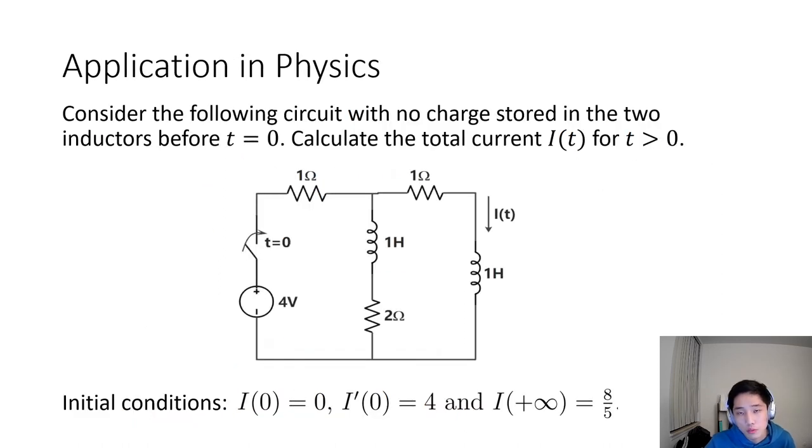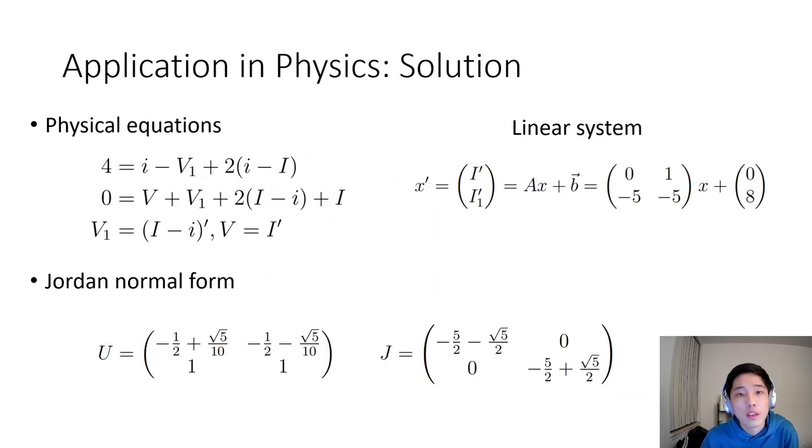Next is the physical applications of circuit. Suppose the following circuit has no charge stored in the two inductors before T equals to zero. Our task is to find expressions for IT with three initial values. First, we can write down three physical expressions and eliminate undesired variables to construct the linear system derivative of x equals to Ax plus B.